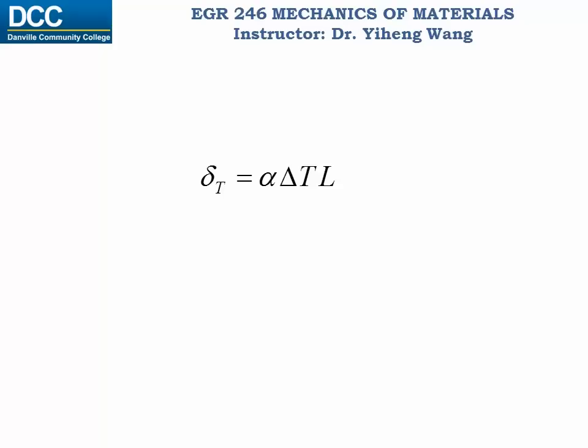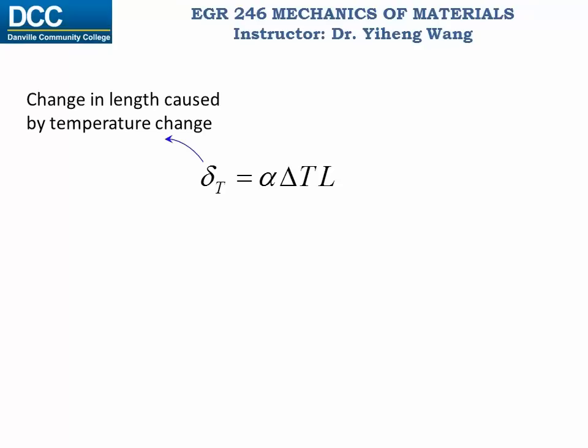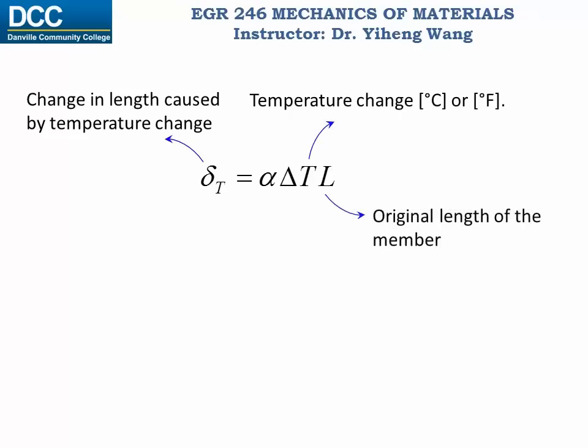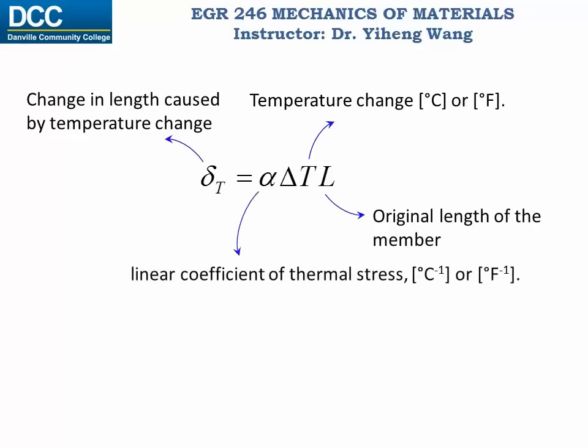We all know that material will expand or contract when experiencing temperature change. So the change in length of the member caused by temperature change, delta T, is calculated by this equation. The capital delta T is the temperature change in degrees Celsius or Fahrenheit, L is the original length of the member, and alpha is the linear coefficient of thermal stress. It is, just like Young's modulus, an inherent material property, and it is in the unit of the reciprocal of degree C or Fahrenheit.